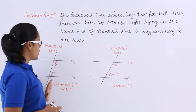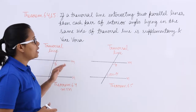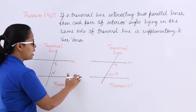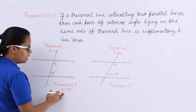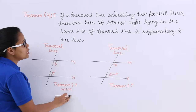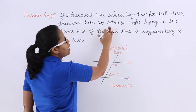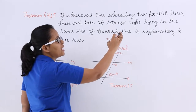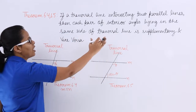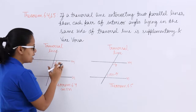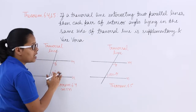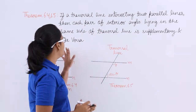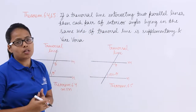If a transversal line — you can see here, this is a transversal line — is intersecting two parallel lines M and N, it has been given that these two are parallel. Then each pair of interior angles lying on the same side of a transversal line are supplementary in nature, and you need to prove the vice versa also.